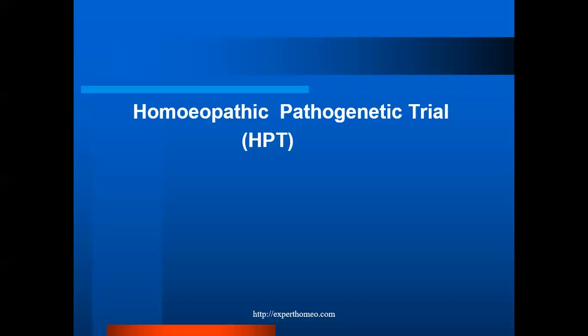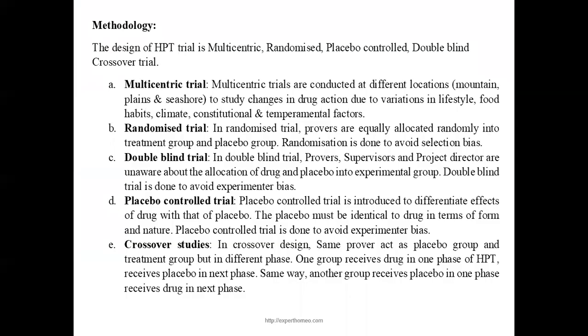The tenets of proving protocol are test substance, proving team, and methodology. The first two tenets — test substance and proving team — we had already discussed in the last class. Today we are going to discuss more about the methodology involved in homeopathic pathogenic trial. The design of HPT is a multicentric, randomized, placebo-controlled, double-blind, crossover trial. We will discuss more about the design of HPT one by one.